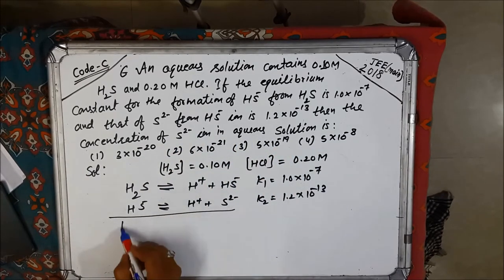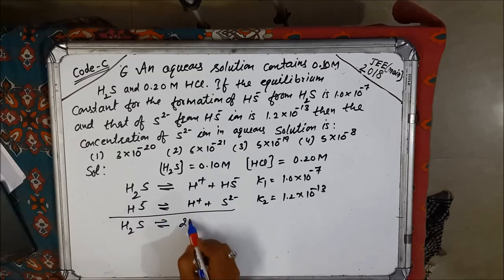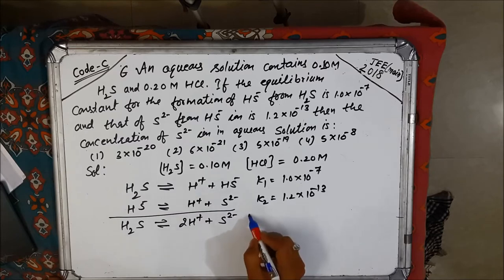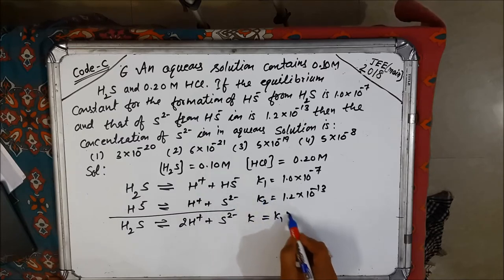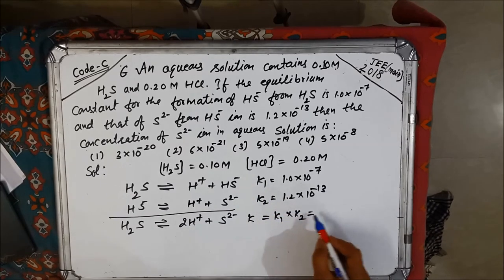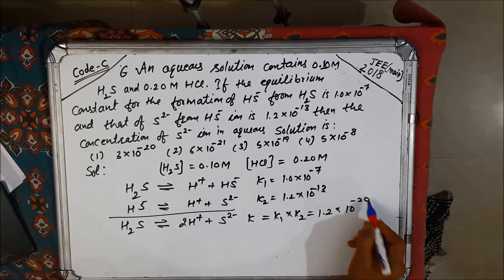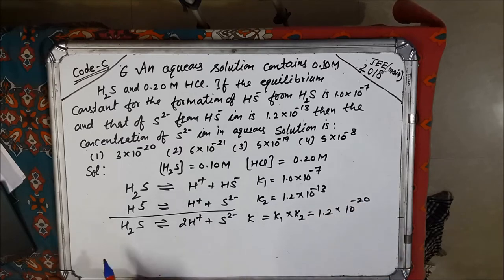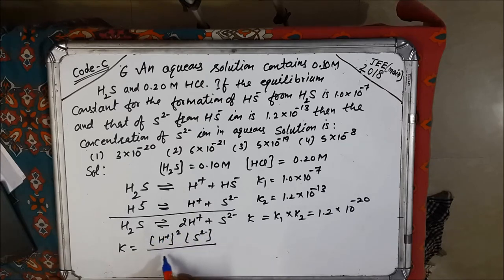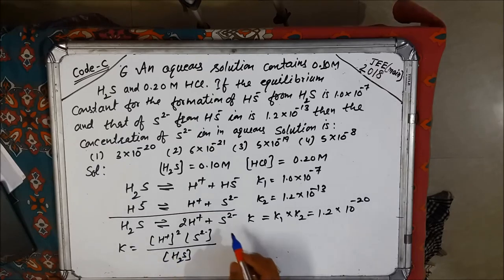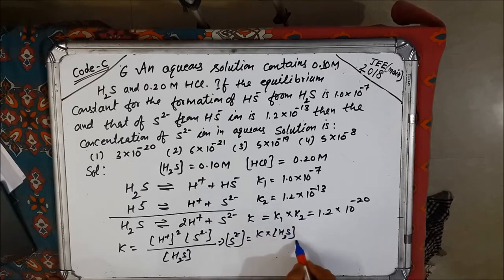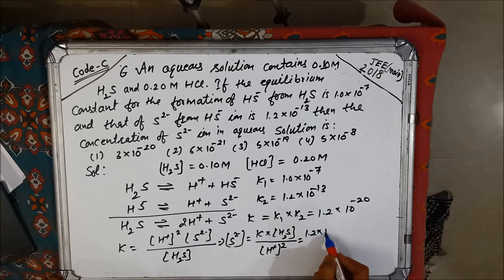We have to calculate the concentration of S²⁻ ion in the aqueous solution. The overall reaction is H₂S → 2H⁺ + S²⁻, and K = K1 × K2 = 1.2 × 10⁻²⁰. Applying the law of equilibrium: [S²⁻] = K × [H₂S] / [H⁺]².